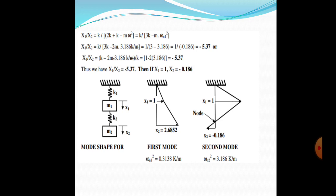For the mode shapes: first mode, ωn1² = 0.3138(K/M), with X1 = 1 and X2 = 2.6858. For the second mode, ωn2² = 3.186(K/M), and we get a different mode with a node.